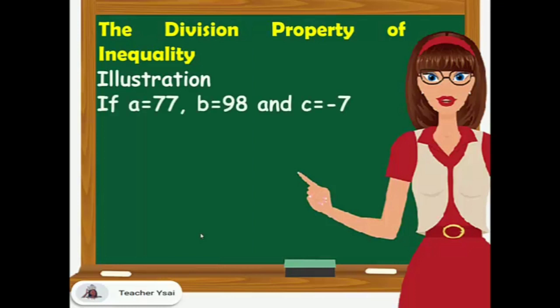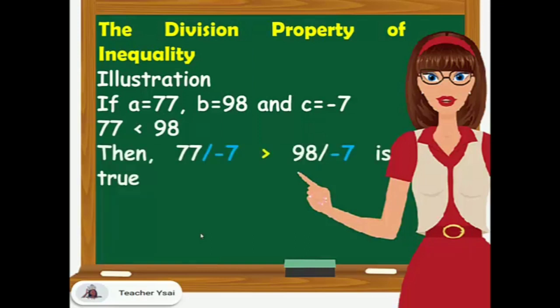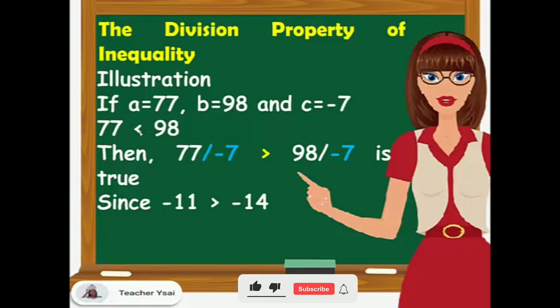Another example: if A equals 77, B equals 98, and C equals negative 7, we know that 77 is lesser than 98. If we divide negative 7 from both sides of the inequality, we have 77 divided by negative 7 is greater than 98 divided by negative 7. Since 77 divided by negative 7 is negative 11, and 98 divided by negative 7 is negative 14, and negative 11 is greater than negative 14. Notice that from lesser than, it became greater than by just dividing a negative number to both sides.